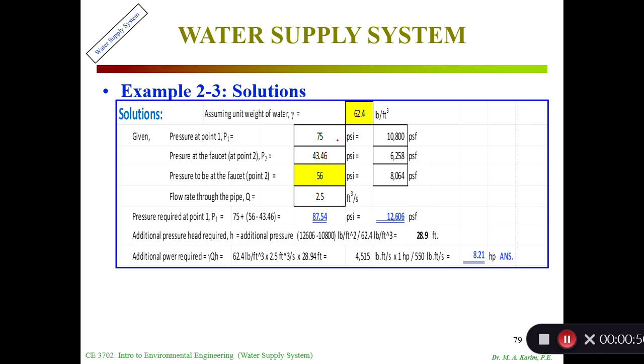P2 is calculated from the last problem, and the pressure to be at the faucet at point 3 is the one we intend to have. Everything I'm converting into PSM. The flow rate is given. Finally, pressure required at point P1 equals: I need 56 psi, I already have this, so this minus this plus this gives me 87.54, that means 12,606 PSM.